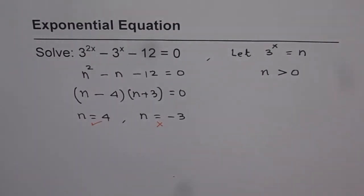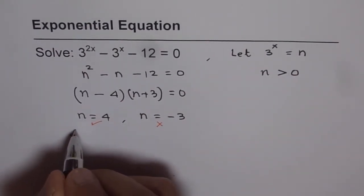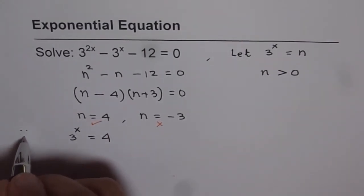Now we can find what x is. We get n equals 4. So 3 to the power of x, which is n, should equal 4 since n equals 3 to the power of x.